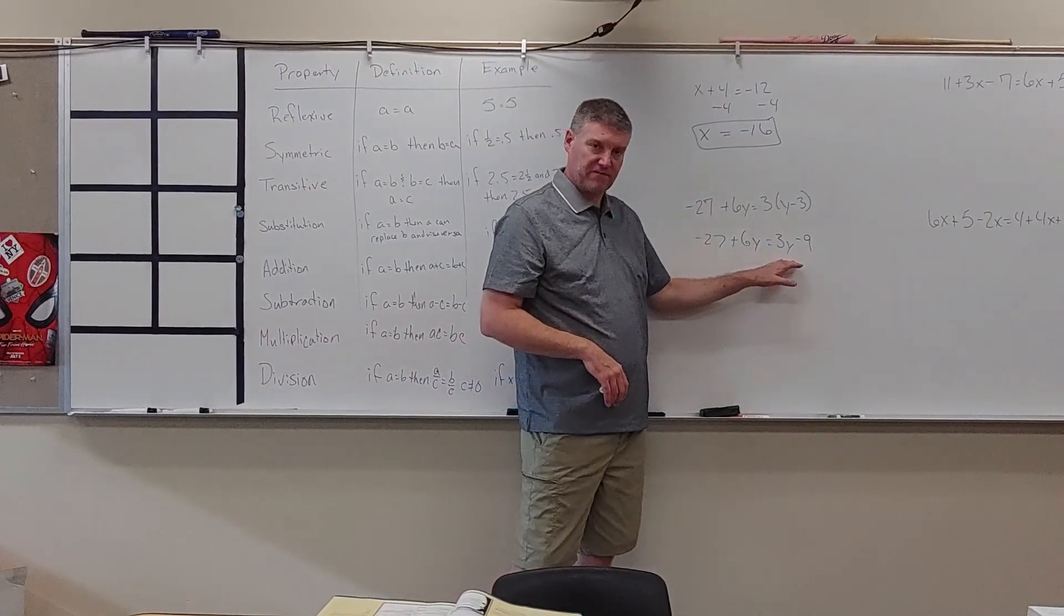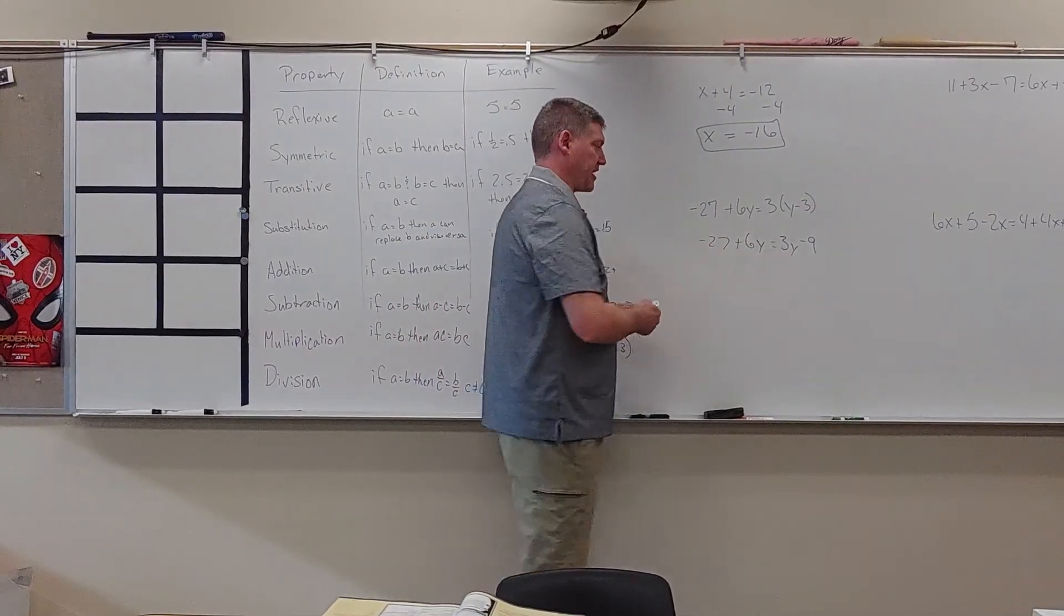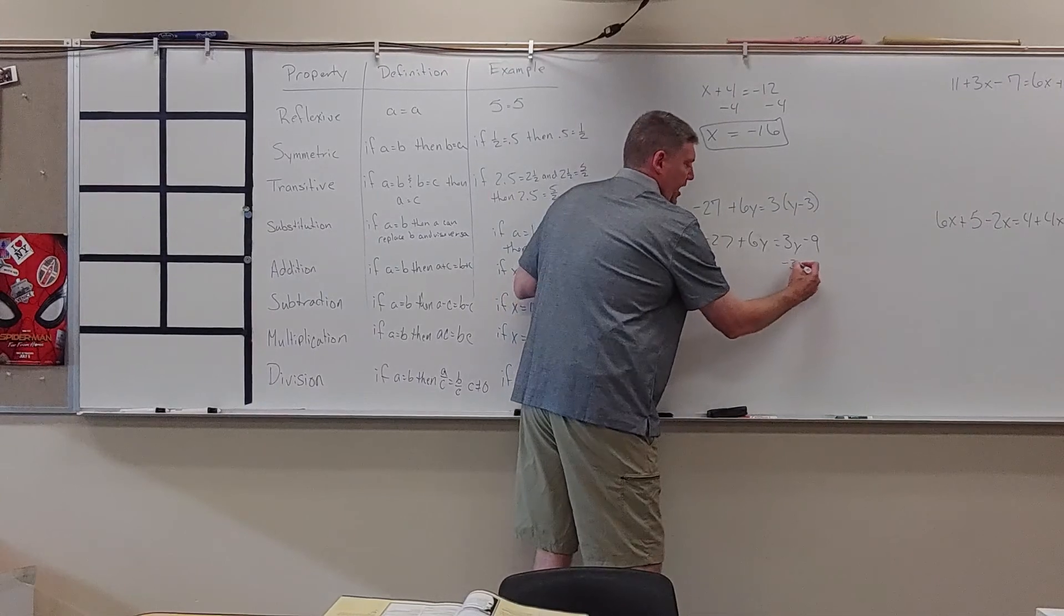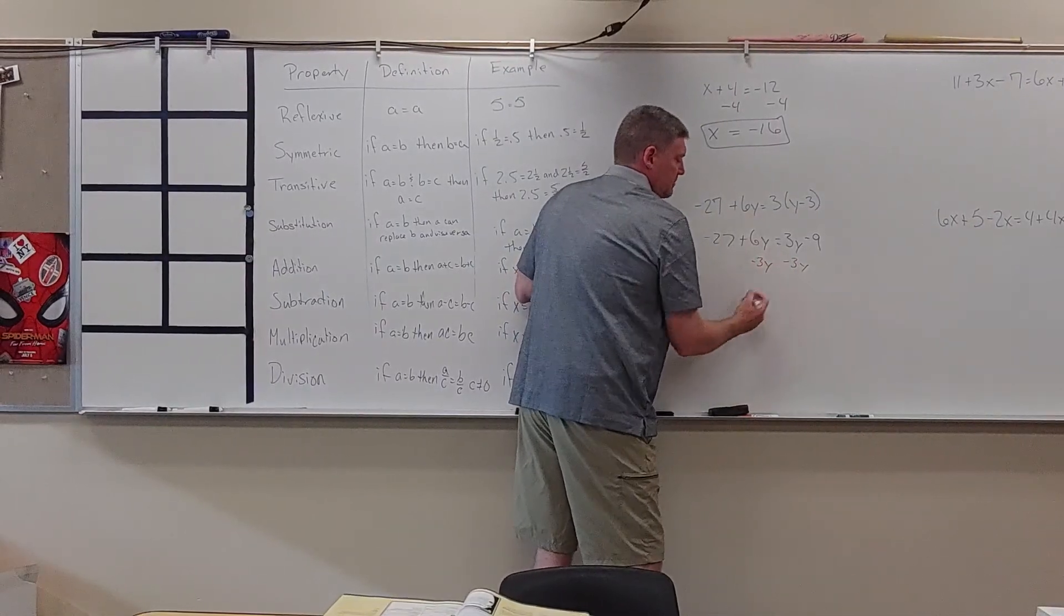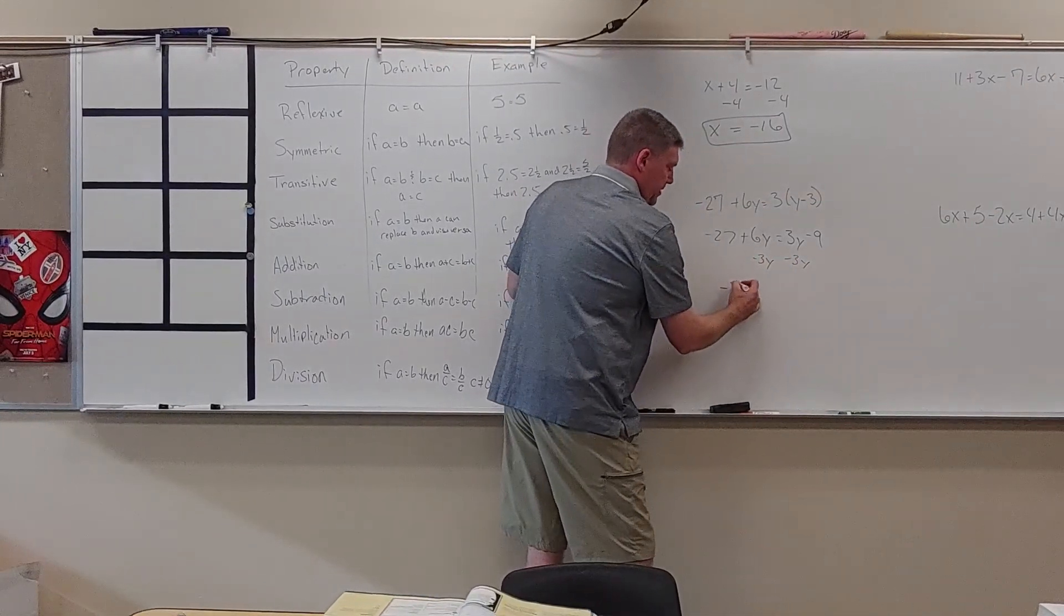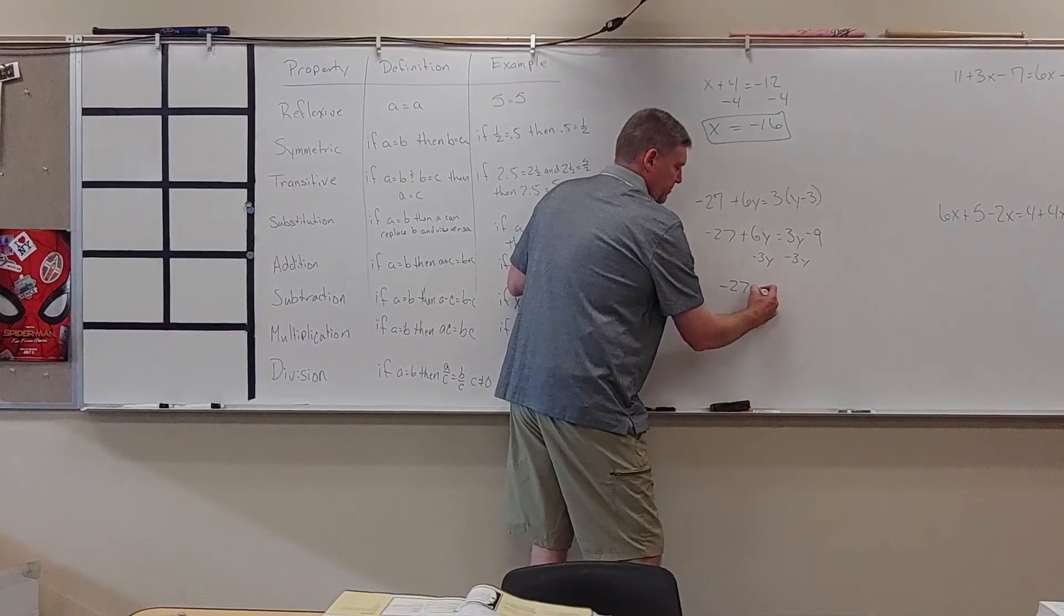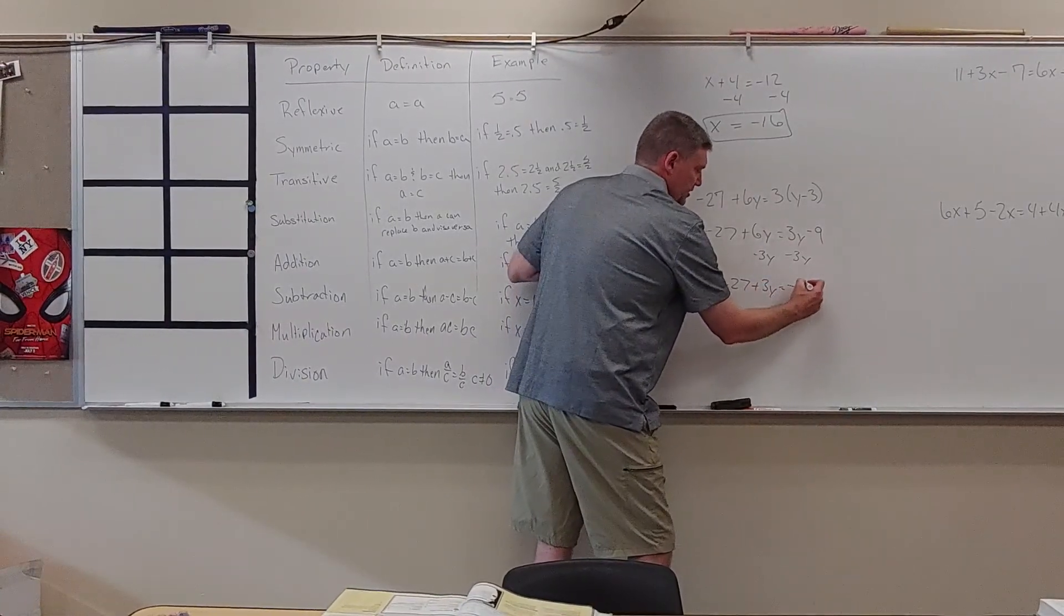So I take my smaller coefficient and move it to the other side. I'm going to subtract off 3Y from both sides using the subtraction property. So I got negative 27 plus 3Y equals negative 9.